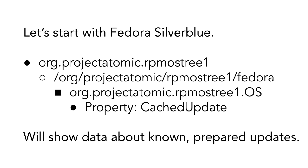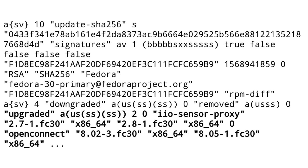Basically everything for Silverblue and ostree happens over D-Bus in terms of the clients. One thing not shown here is that you'd want to query initially for what OSes are installed, then query the OS that's currently booted. Once you've established what OS is currently booted, you can look for the cached update data, and it will show data about updates that are on the way. If this is not empty, we know there are updates coming.